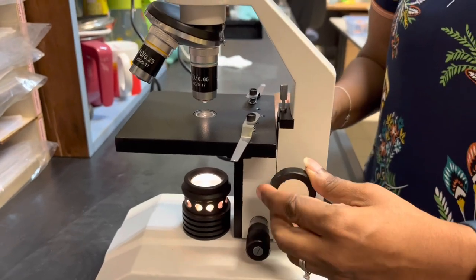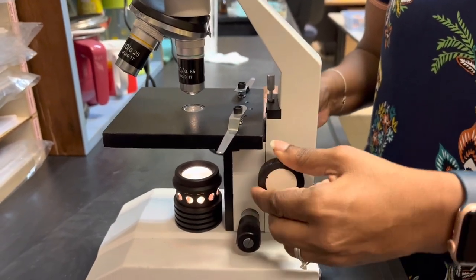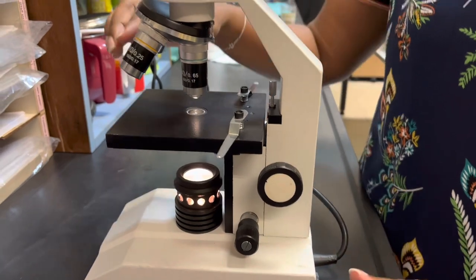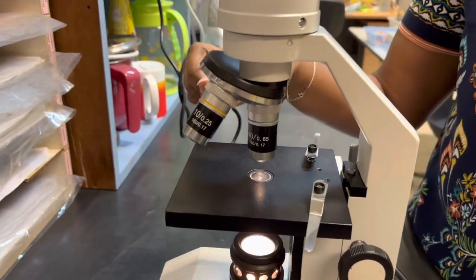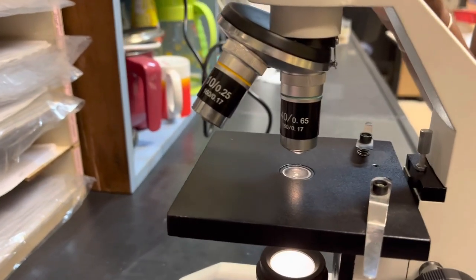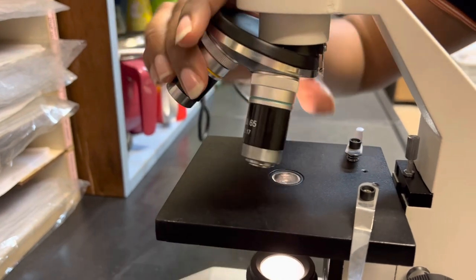It can be moved by turning this knob, which we call the coarse knob. The lenses over here are called objective lenses, and they have different magnifications. You always start off with the lowest power, so in this case, the 4x magnification.